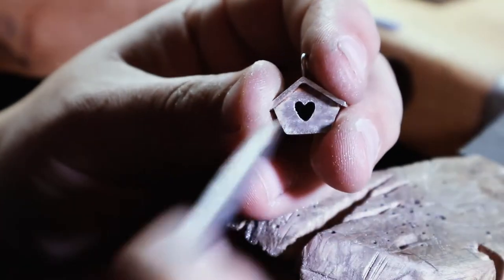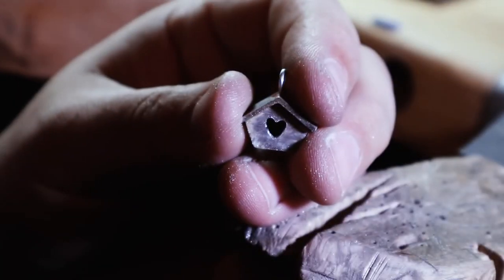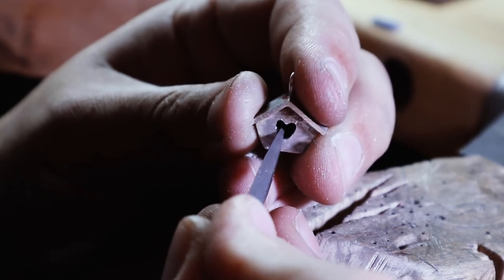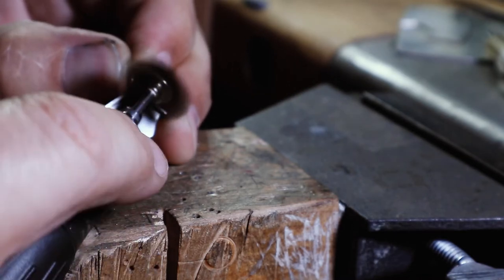Next I use a safety back or a barret shaped needle file to sharpen the bottom of the heart. Once that is done, I give it a quick clean and polish. Off camera I added a little post to the bottom.